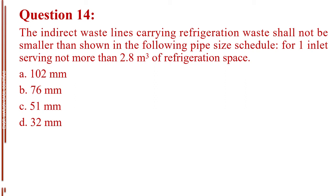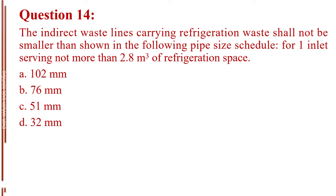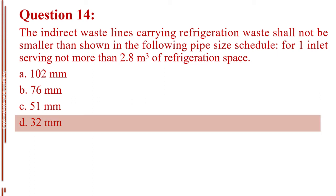Question number 14. The indirect waste lines carrying refrigeration waste shall not be smaller than shown in the following pipe size schedule, for one inlet serving not more than 2.8 cubic meters of refrigeration space. Letter A, 102 millimeters. Letter B, 76 millimeters. Letter C, 51 millimeters. Letter D, 32 millimeters. The answer is Letter D, 32 millimeters.